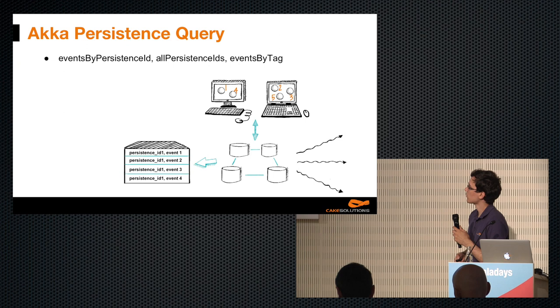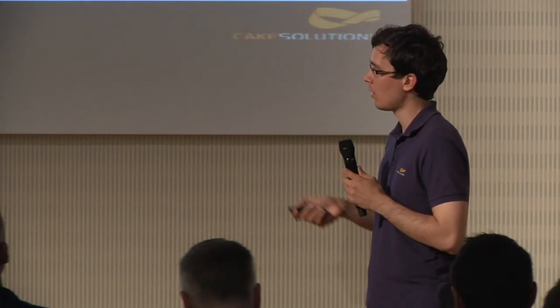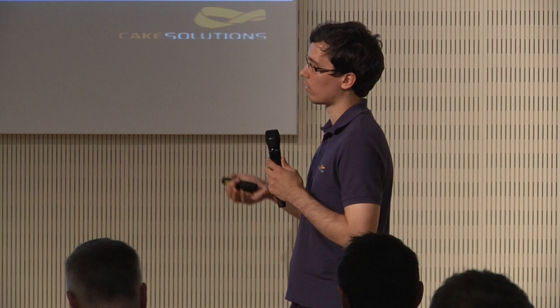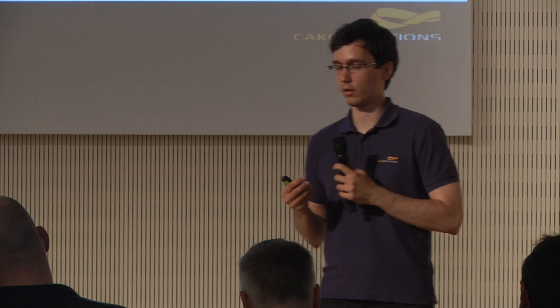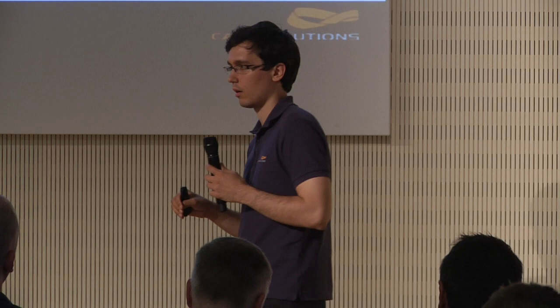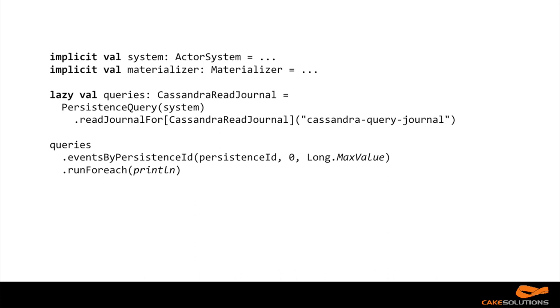We'll talk mostly today about Akka Persistence Query — that's the read side of CQRS. The write side is storing the events in the event-source journal, and Akka Persistence Query gives us a way to read that data. Essentially it uses streaming: we subscribe to a stream, and every time an actor stores a new event into the event-source journal, the stream will immediately be updated, so the subscriber will immediately see that change.